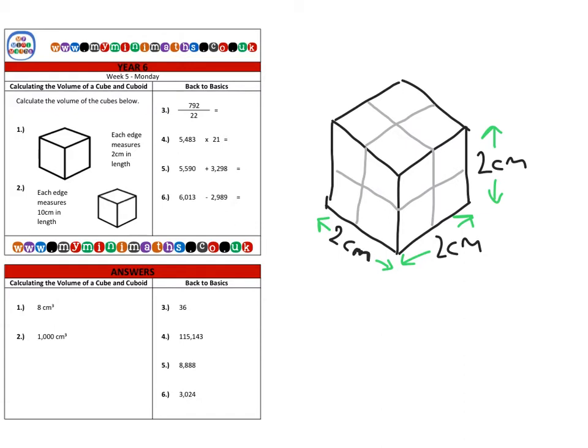The first thing we can do is look at the bottom layer, which is two cubes multiplied by two, which is four.